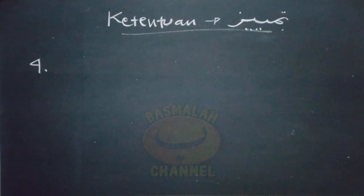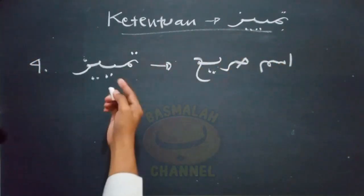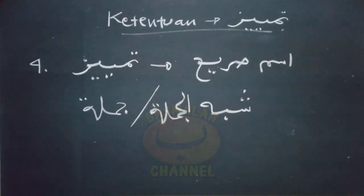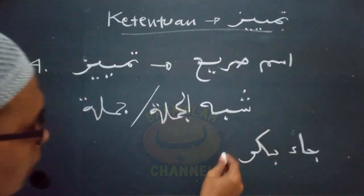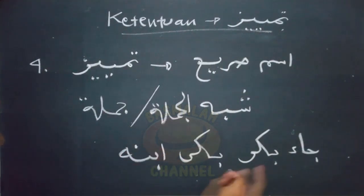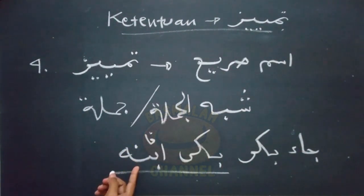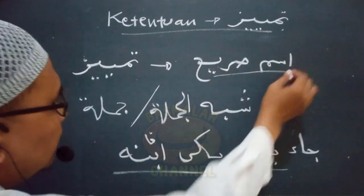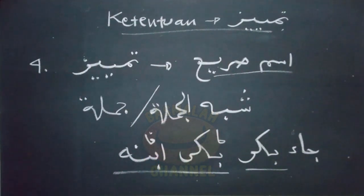Kemudian ketentuan yang keempat, Tamyis harus berupa isim sorih. Jadi tidak boleh Tamyis itu berupa jumlah atau syibhul jumlah, hal ini tidak diperkenankan. Manakala kita temukan susunan seperti 'Ja'a bakrun baka ibnuhu' — datang Bakar, menangis anaknya — lafad 'baka ibnuhu' adalah jumlah fi'liah. Susunan jumlah ini tidak boleh dijadikan Tamyis dari lafad 'bakrun'. Dalam susunan ini, 'baka ibnuhu' adalah hal dari lafad 'bakrun', bukan sebagai Tamyis.